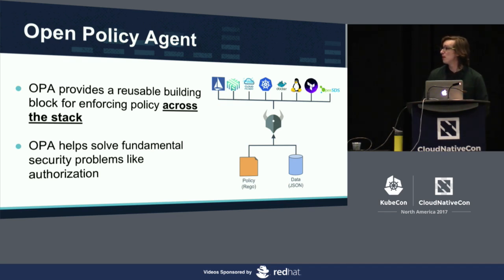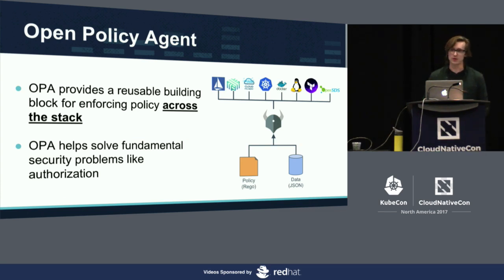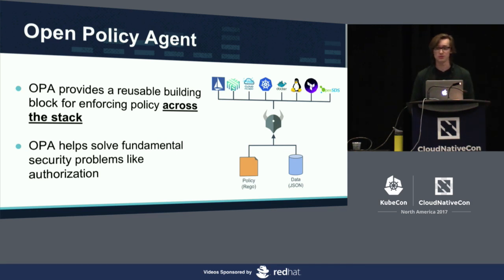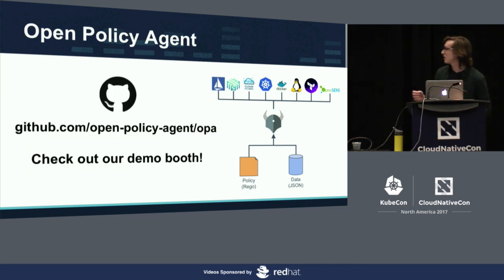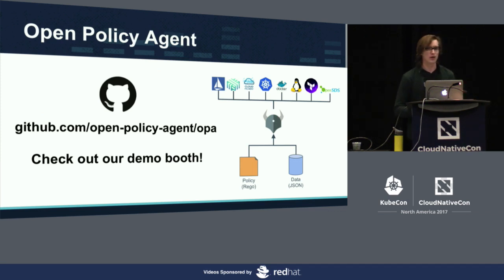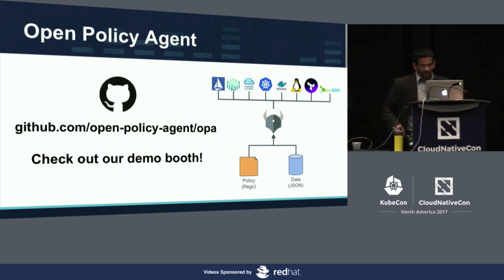You don't have to start from scratch because we have great tutorials on the website and a number of pre-built integrations you can use out of the box for projects like Kubernetes, Docker, and Istio, with many more coming. We're very excited about the Open Policy Agent project because it provides this reusable building block to the community and to the ecosystem. It helps solve fundamental security problems like authorization across the stack — because ultimately we all need a way to control who can do what throughout our systems. Please check out the repo, give us your stars, and we also have a demo booth in the vendor area.